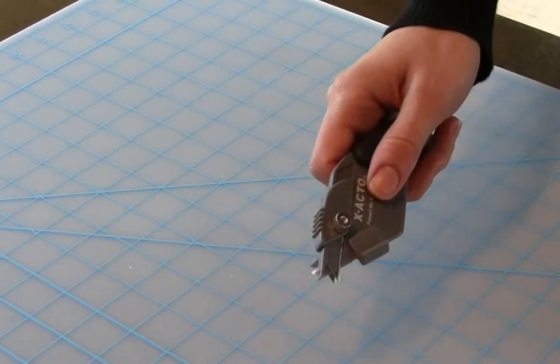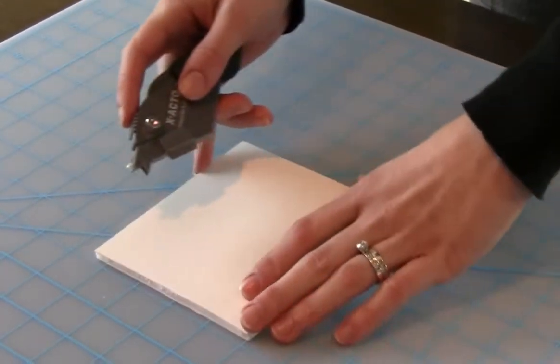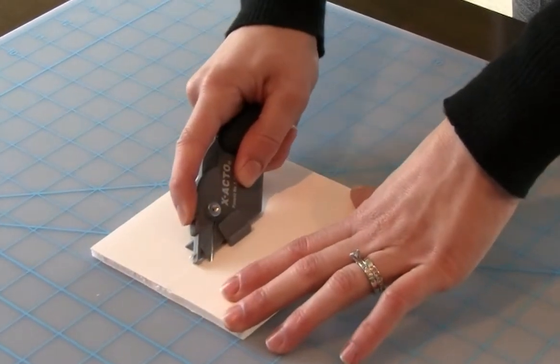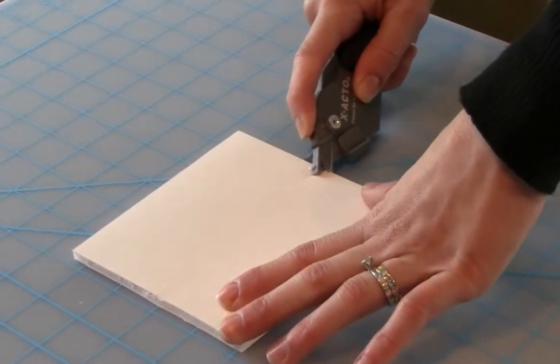Next, pull the cutter gently toward you. This will result in one blade cutting the first layer of paper and the second blade scoring the first layer of paper.